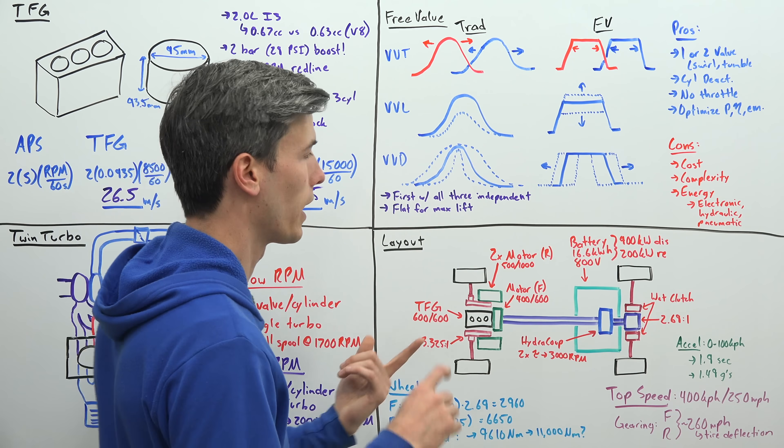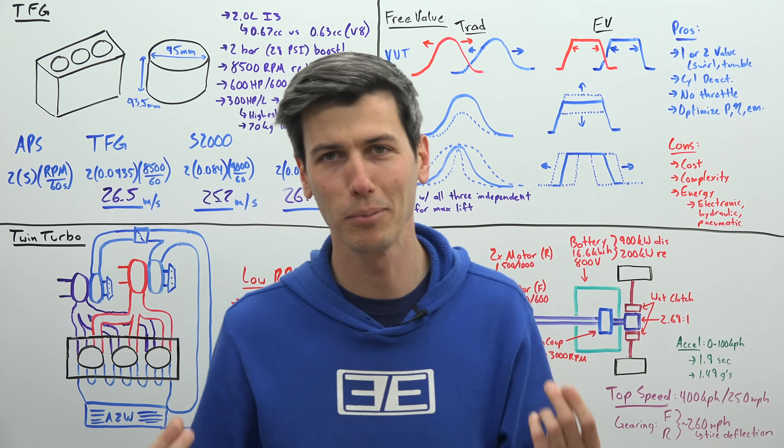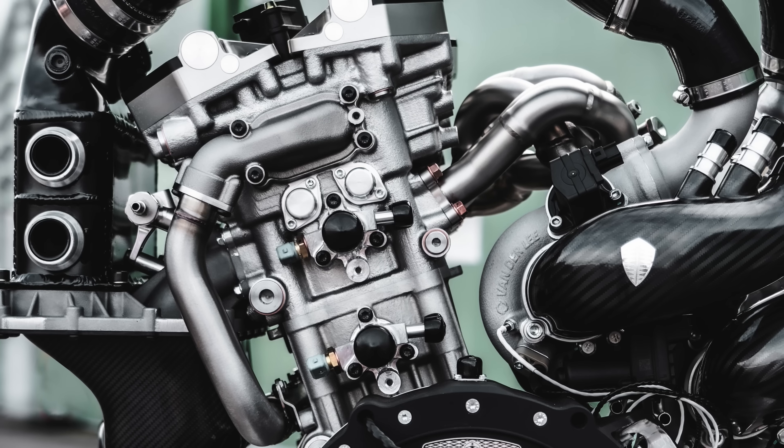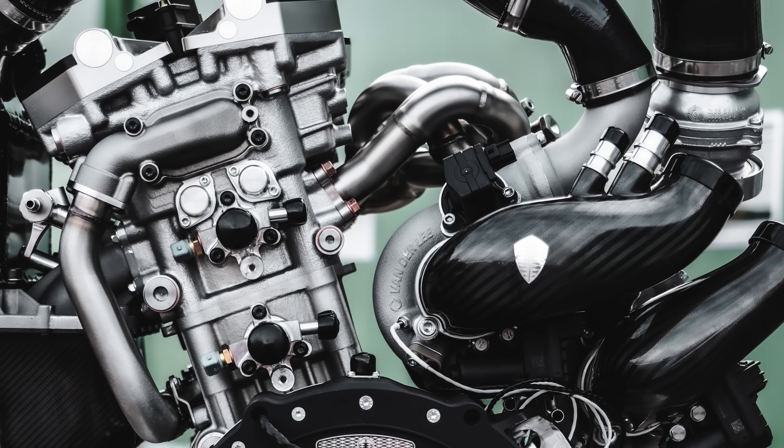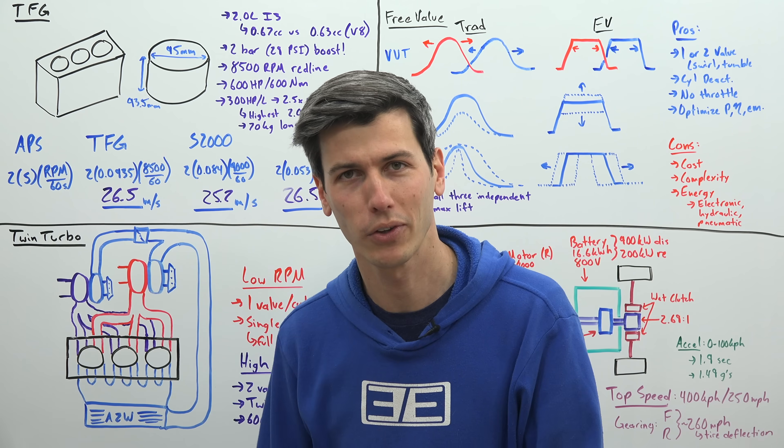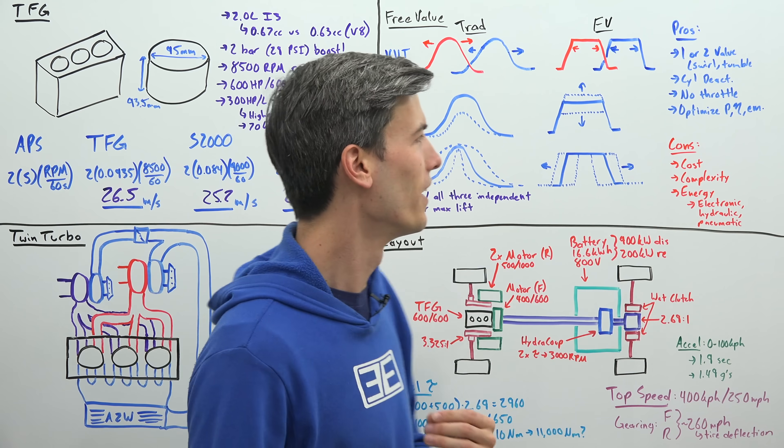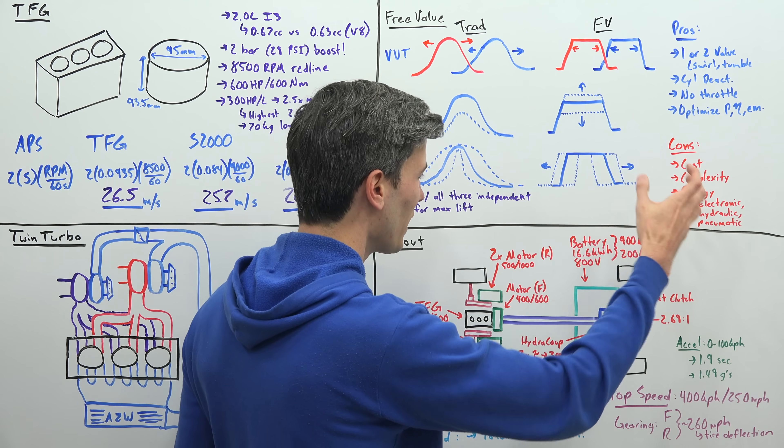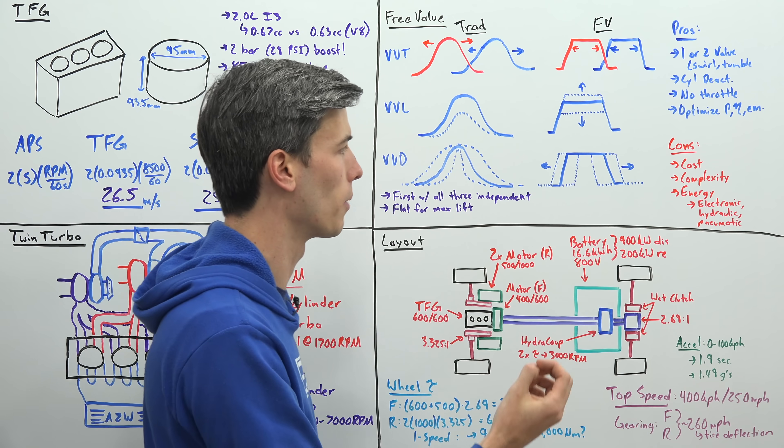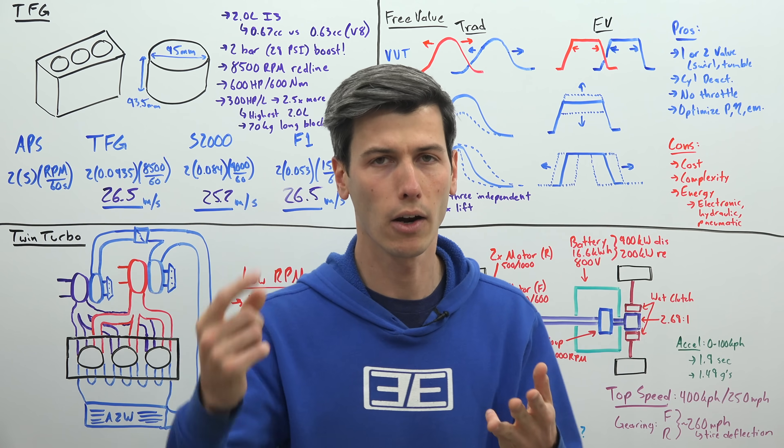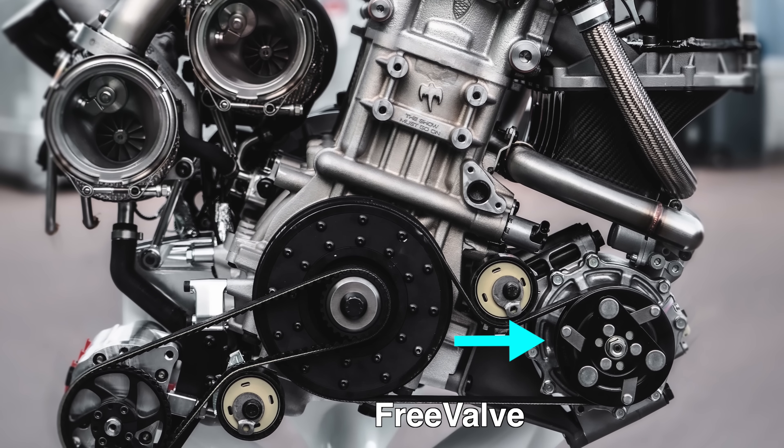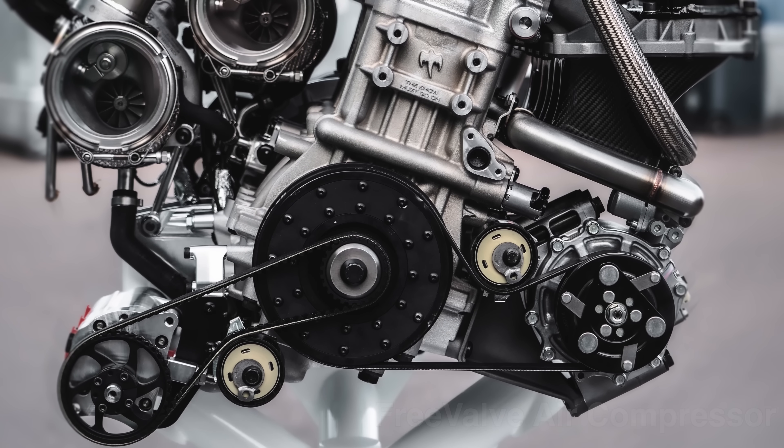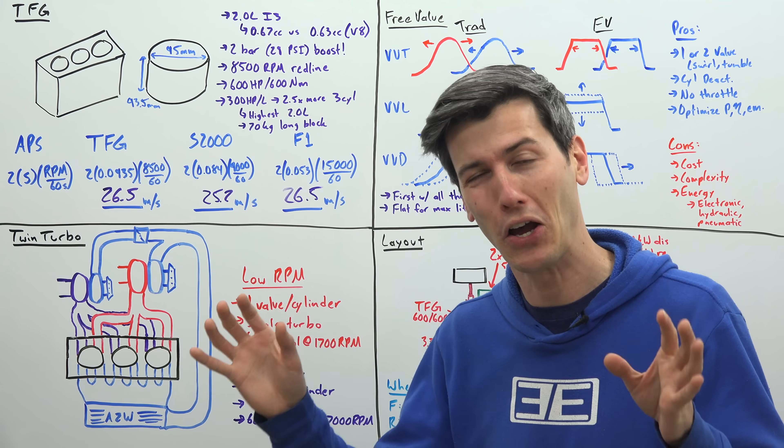Now, there are of course some drawbacks to this system, the obvious ones being cost and complexity. This is an extremely expensive car. So don't look at this and be like, wow, none of the other manufacturers know what they're doing, because Koenigsegg can get 600 horsepower out of a two-liter engine. So could they. They would just charge a lot more for their cars. This, you know, is a million plus dollar car. So cost comes with these added cool features. And then from an energy standpoint, it actually does seem like a fairly energy intense system, because it's electronic, it's hydraulic, and it's pneumatic. So you have an air compressor on board as well in order to power opening and closing these valves. A traditional spring will return the valve, but air pressure will set it down to its lift.